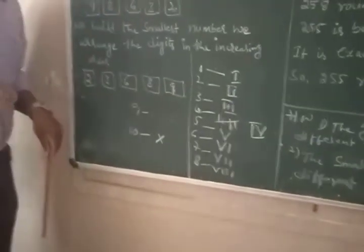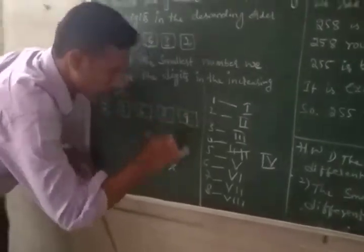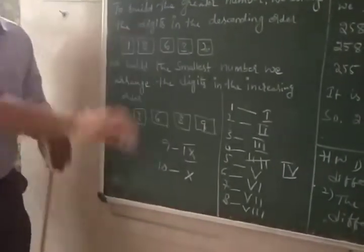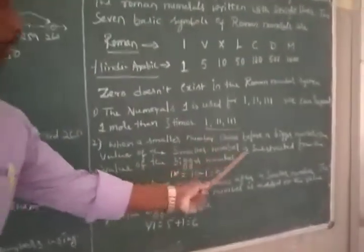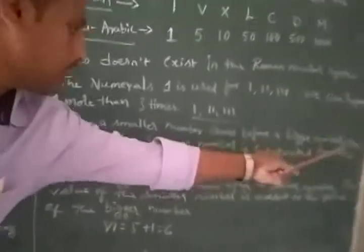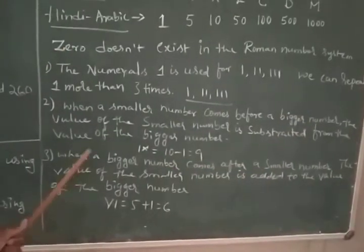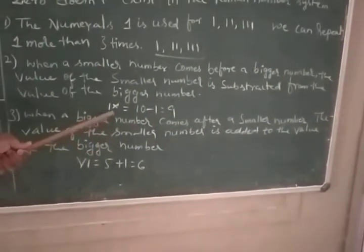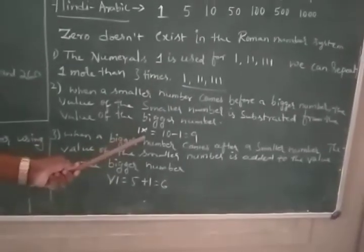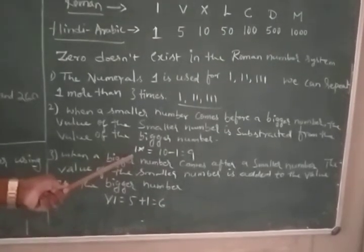But 9 is IX — that is a subtraction. When a smaller number comes before a bigger number, the value of the smaller number is subtracted from the value of the bigger number. For example, 9: here I comes before X, so we subtract — IX equals 9.